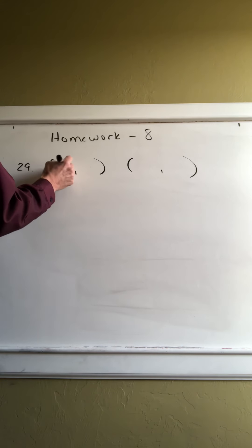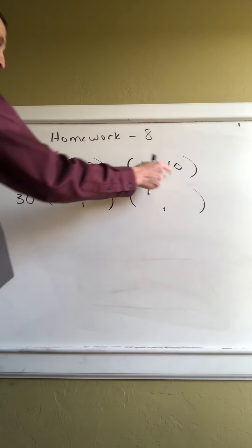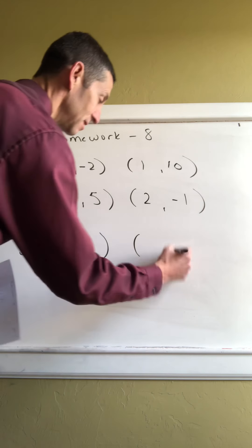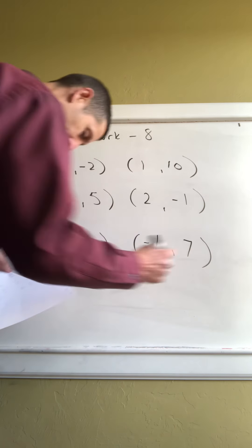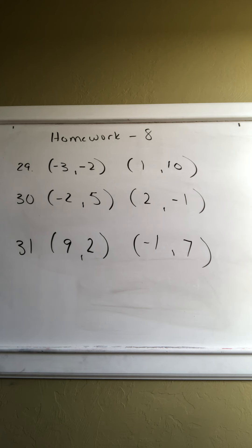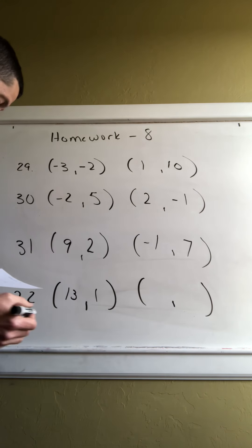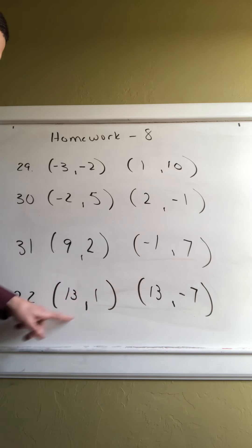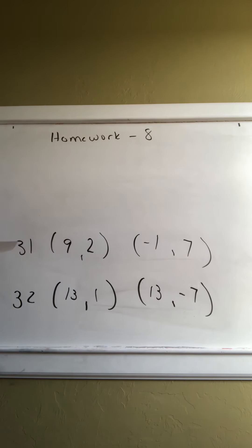For homework eight we have eight questions, problems 29 through 36. Here we go: problem 29 is (-3, -2) and (1, 10). Problem 30 is (-2, 5) and (2, -1). Problem 31 is (9, 2) and (-1, 7). Problem 32 is (13, 1) and (13, -7) — heads up, there's a 13 minus 13 coming, so watch for a zero there, that's a trap.